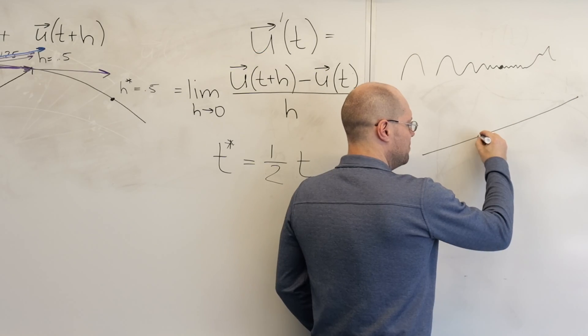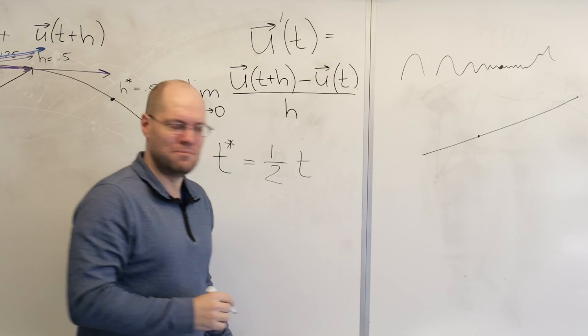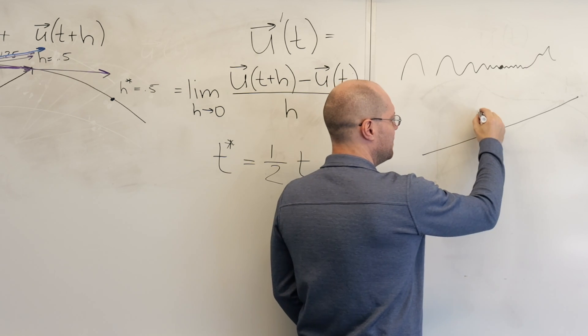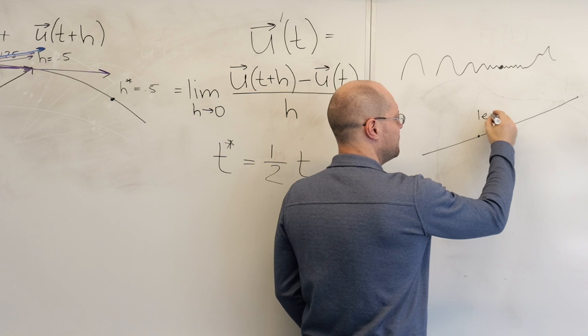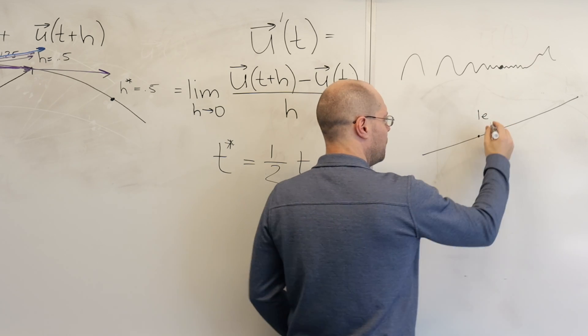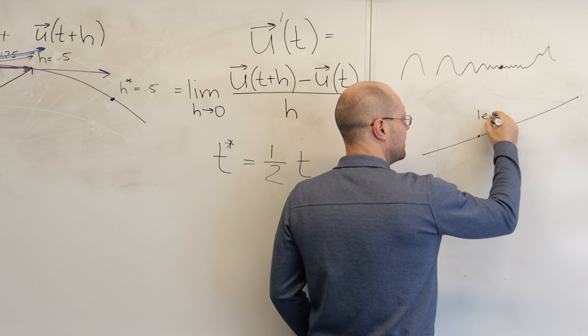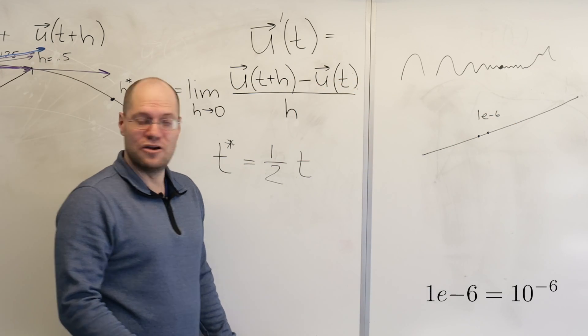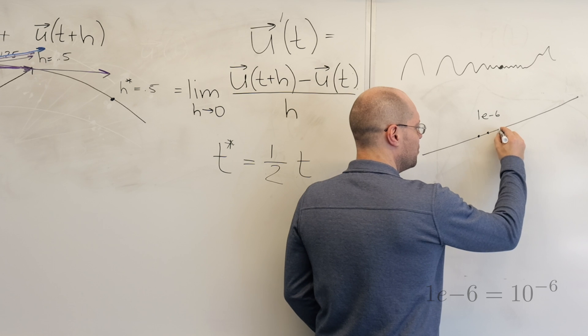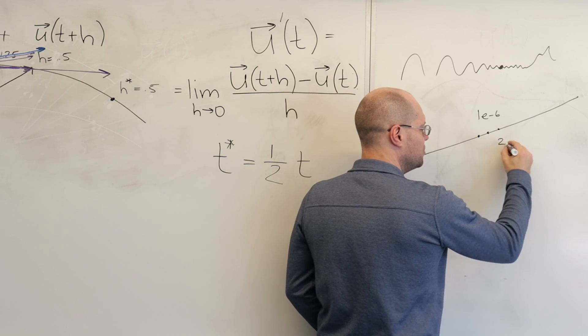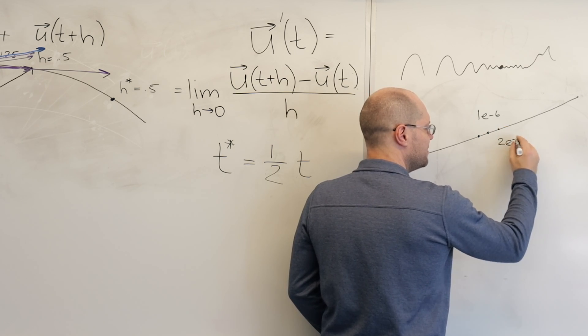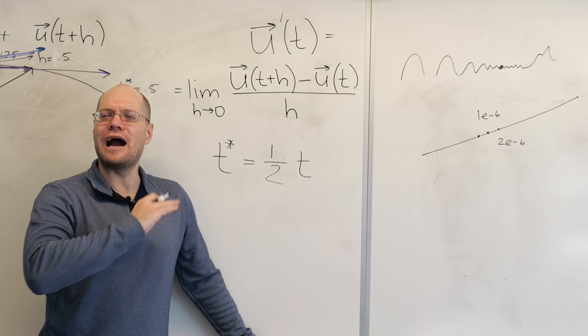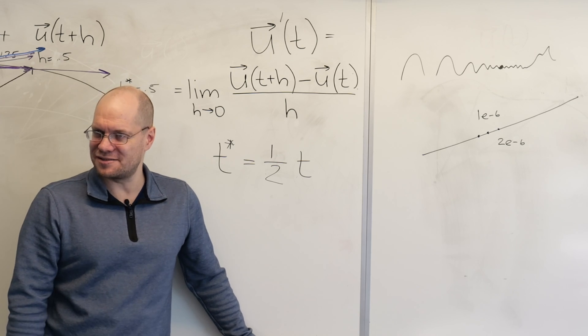Let's say we zoomed in by a million, by a factor of a million. Then this point right here might be in scientific notation, one E minus six, right? And then this point right here will be two E minus six. What I'm trying to say is that they will be equally spaced, right? No matter how crazy the parameter is.